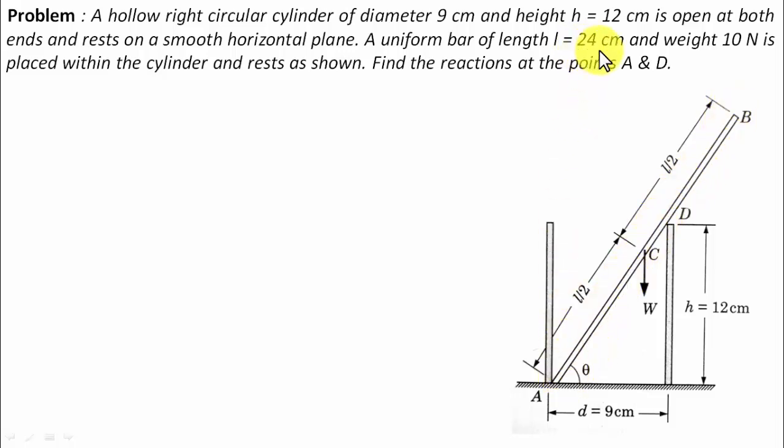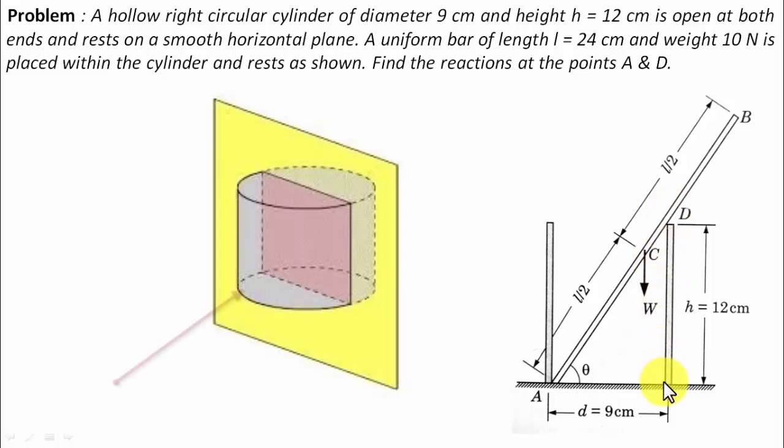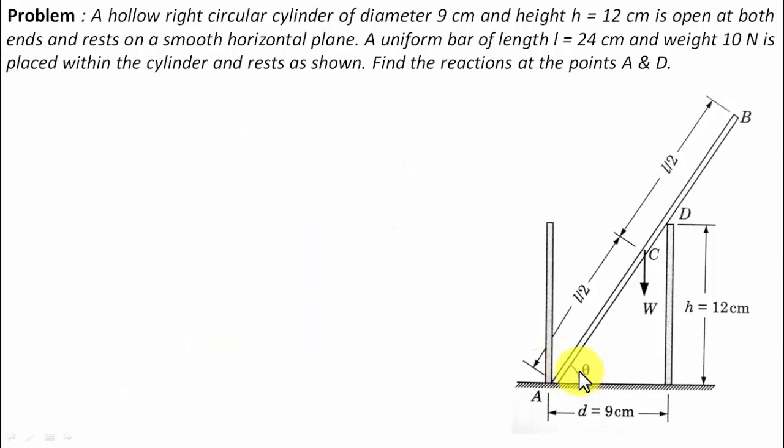Now this has been placed within the cylinder. So this is the cross section of the cylinder inside which this bar AB has been kept, making a certain angle theta with the horizontal. What we need to do is find the reactions at point A and at D. Let's quickly get started.